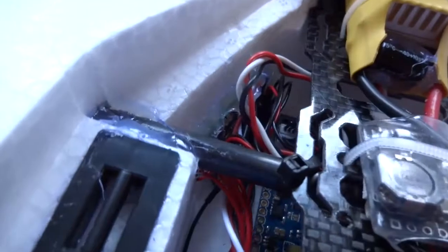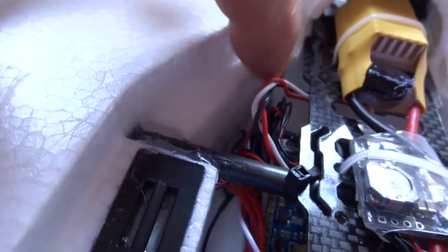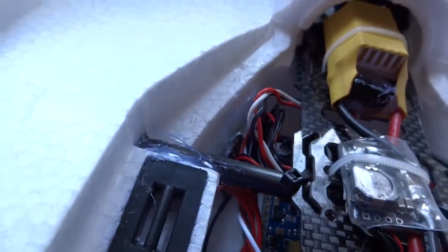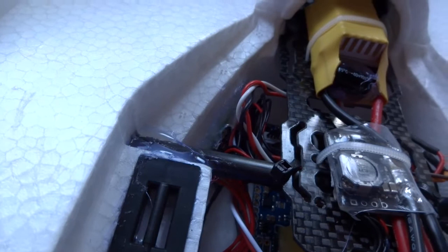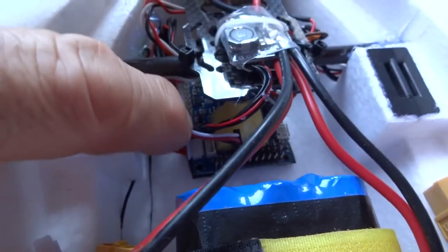Just to the left hand side of that, you can't really see it, but I've embedded it into the side of the fuselage, and that's a 2.4 GHz radio receiver. It's connected to the flight controller with just a single PPM lead.